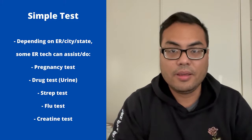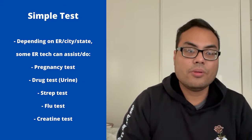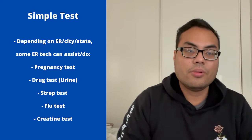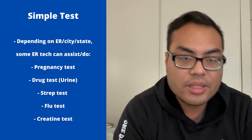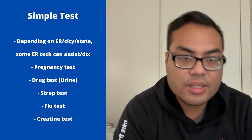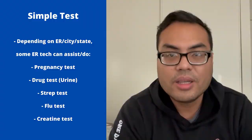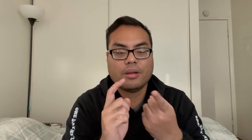Depending on the ER and the city you live in, some ER techs can help the nurse do pregnancy tests, urine tests, strep throat tests, drug tests, and possibly creatinine tests. Another test you will be doing in the ER is blood sugar level. For diabetic patients, you do a glucose test — you prick a finger, use a blood glucose machine to measure the level, and let the nurse know whether the patient is stable or needs insulin.